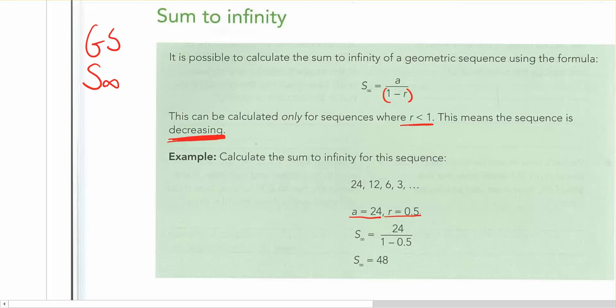And r, 0.5. Again, if you're not sure where that comes from, just do 12 over 24. The second term on top of the first term as a fraction. That will get you 0.5, so it's halving each time.